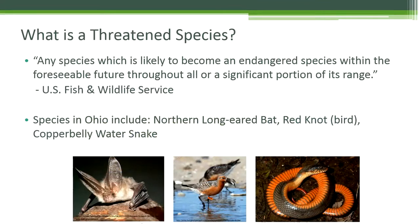Some species aren't as close to extinction as endangered species, but they are still having troubles. These are called threatened species, and they are defined as any species in which it is likely to become an endangered species within the foreseeable future throughout all or a significant portion of its range. Threatened species in Ohio include the northern long-eared bat, the red knot, which is a bird, and the copper belly water snake.